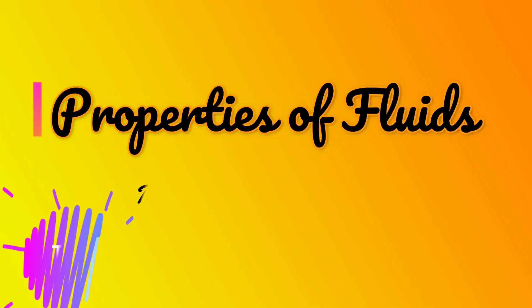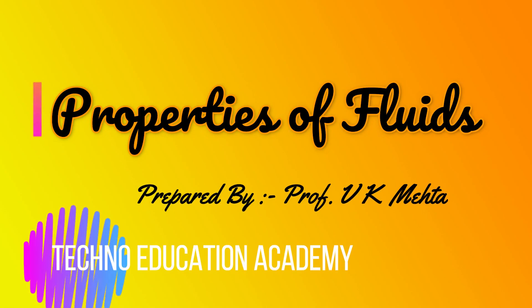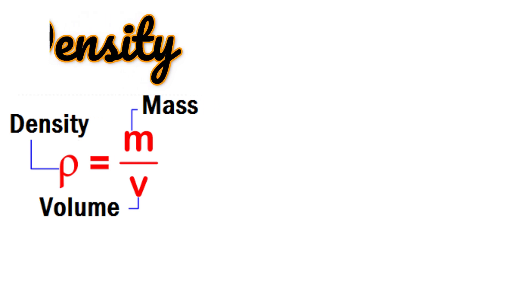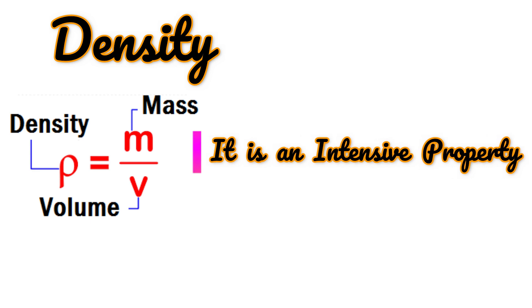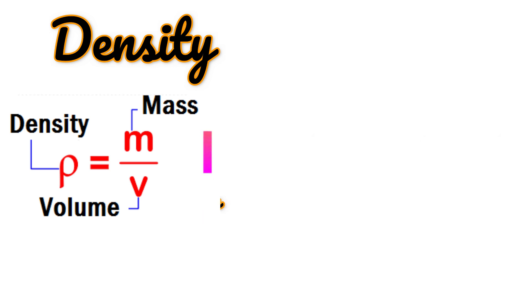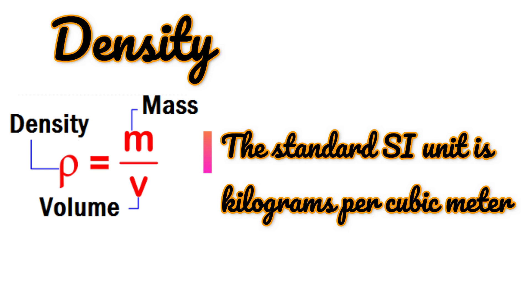Hi guys, this is Vijay. Today I am going to talk about different properties of fluid. Let me start with density. Density is defined as the mass per unit volume. It is an intensive property, mathematically defined as mass divided by volume: rho equal to m upon v, where rho is density, m means mass, and v means volume.